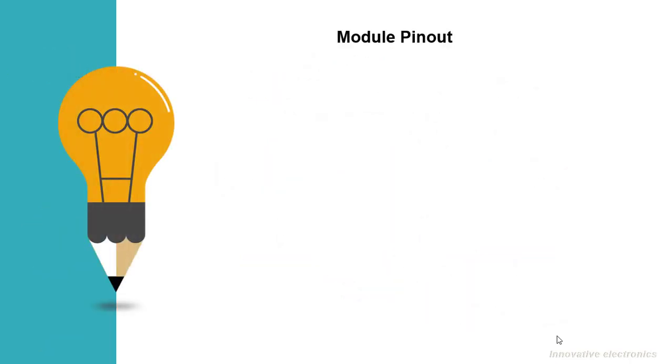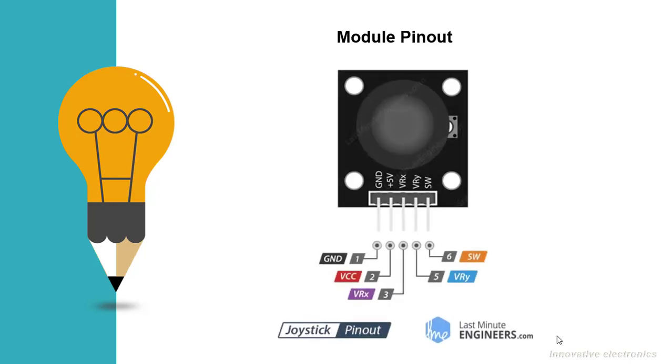Let's have a look at the pin out of 2-axis thumb joystick module. GND is the ground pin which we connect the GND pin on the circuit. VCC supplies power for the module. You can connect it to 5V output from your Arduino. VRX gives readout of the joystick in the horizontal direction, that is how far left and right the joystick is pushed. VRY gives readout of the joystick in the vertical direction, that is how far up and down the joystick is pushed.